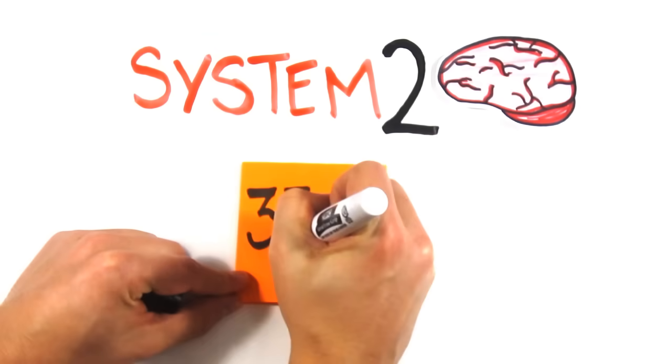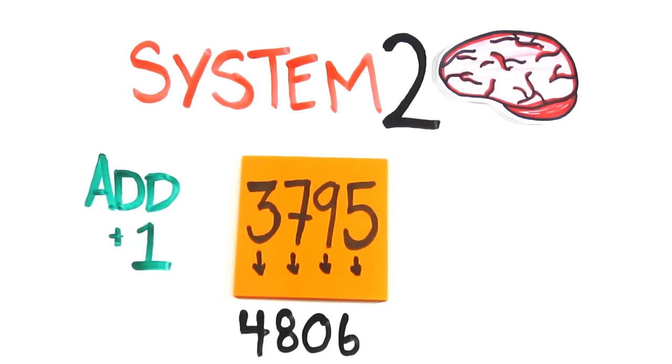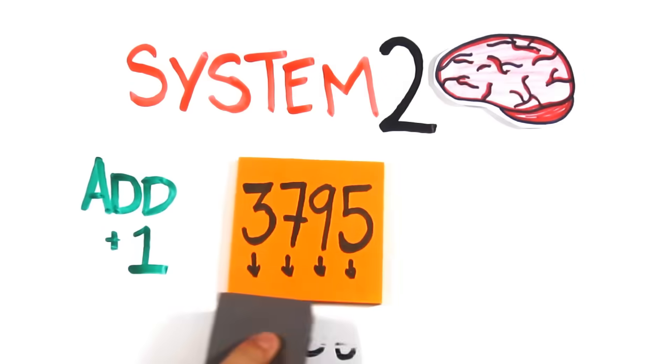Want to see your System 2 in action? I'll show you a string of four digits. You read them aloud, then add one to each of the original digits. If the card reads 3795, the correct response would be 4806. We'll then go to the next card and you'll do the same, followed by the next card. Ready? Go!